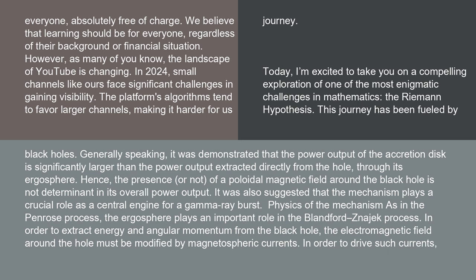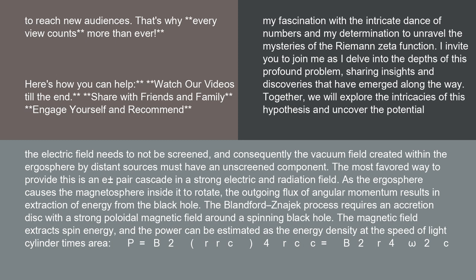In order to drive such currents, the electric field needs to not be screened, and consequently, the vacuum field created within the ergosphere by distant sources must have an unscreened component. The most favored way to provide this is an electron-positron pair cascade in a strong electric and radiation field. As the ergosphere causes the magnetosphere inside it to rotate, the outgoing flux of angular momentum results in extraction of energy from the black hole.